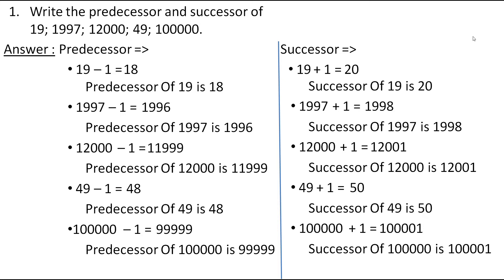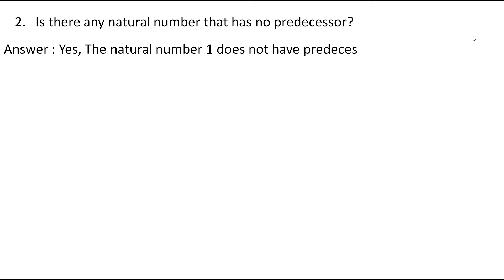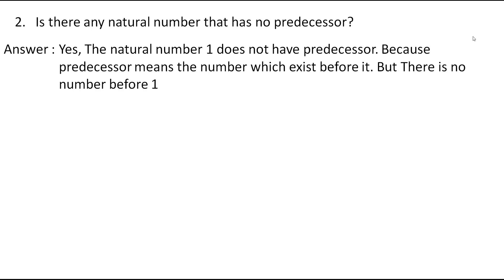Let's move to the second question. The second question is: is there any natural number that has no predecessor? The answer is yes. The natural number 1 does not have a predecessor, because predecessor means the number which exists before it, but there is no number before 1, and natural numbers start from 1 itself.